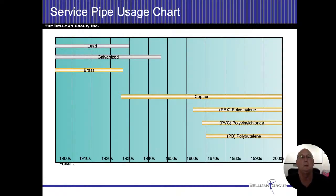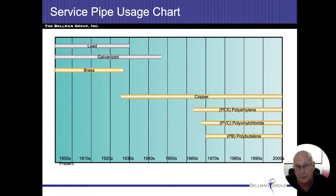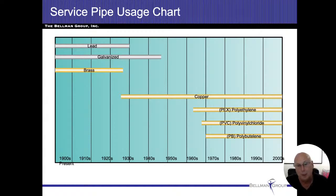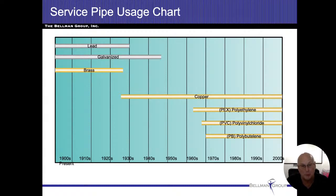Lead pipes were used all the way up into the fifties and sixties in the Chicago area. Lead does really affect younger people, pregnant women, and others. In Chicago, they were putting a chemical in the water that creates a coating on the inside of the lead pipe, which kept lead levels low in drinking water. However, when they cut those pipes to install water meters, they disturbed that coating and homes started getting really high spike levels of lead in the water. They actually stopped that program for homes with lead pipes.